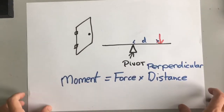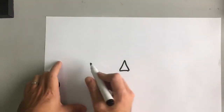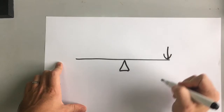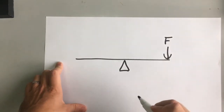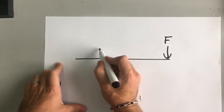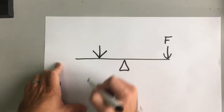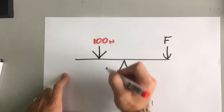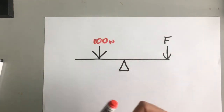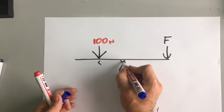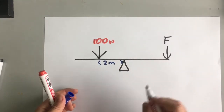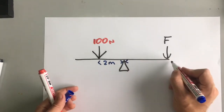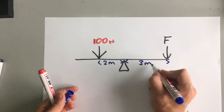You can also have moments that balance each other. If we take another seesaw example, you can have a force F on one side that is balanced by a larger force on the other side. Let's say this force is 100 newtons and it is 2 metres away from the pivot, while F over here is 3 metres away from the pivot.